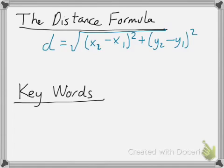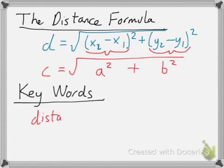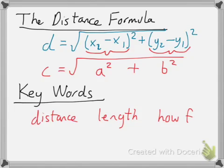Do you see how that looks somewhat like the Pythagorean theorem? In the Pythagorean theorem, this d is the same as our c — we've already taken the square root. The (x2 minus x1) squared, well that's our a. And then this part over here, well that's our b. See how it's related to the Pythagorean theorem? Now, it's also important to keep in mind some key words that in a problem statement might indicate you need to use the distance formula. Those key words might be: distance, the length of a segment, or how far is it?